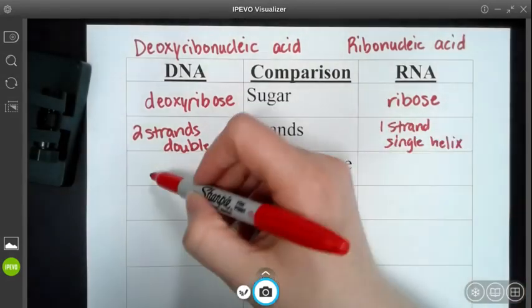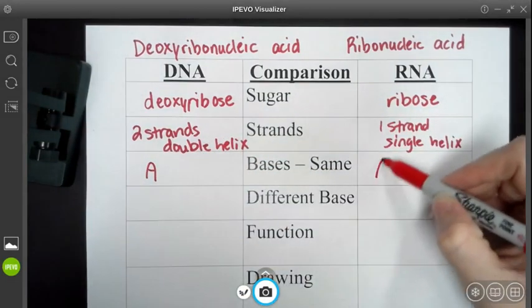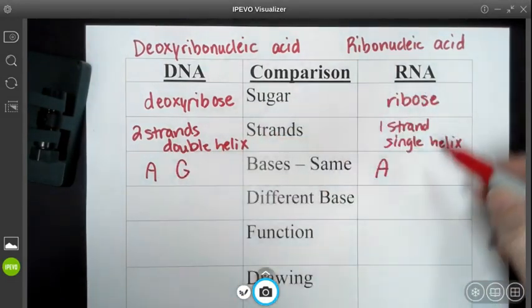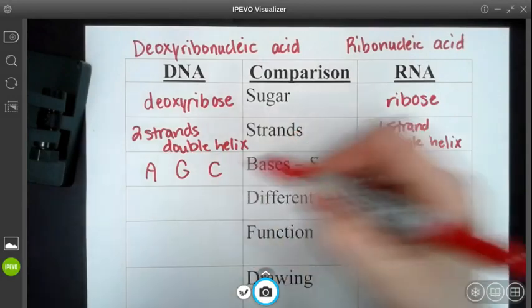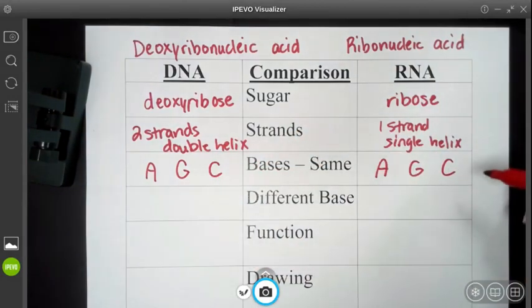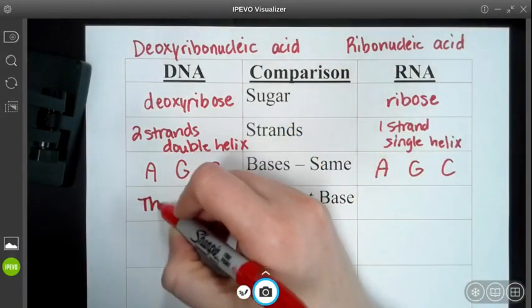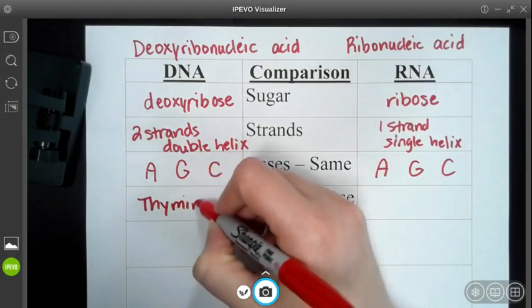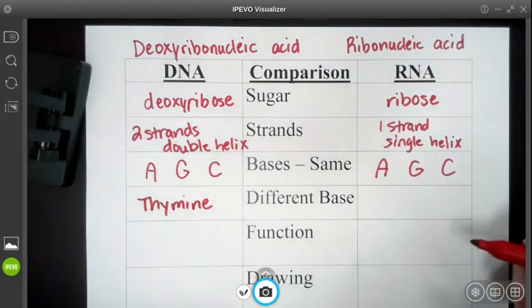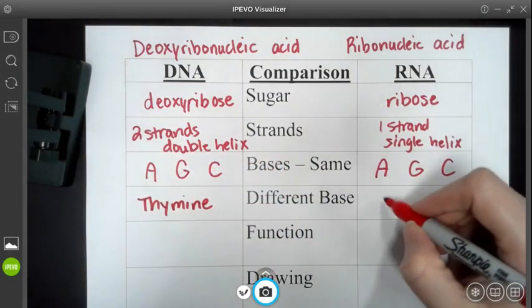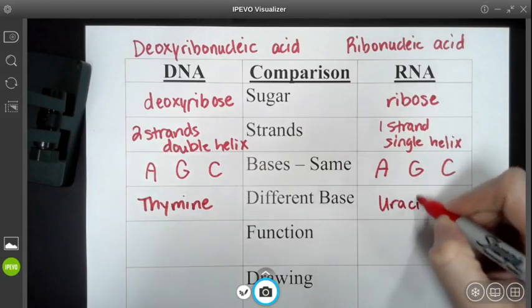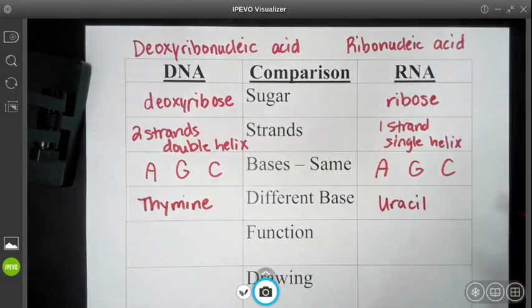The three that are found in both are adenine, guanine, and cytosine. Now DNA has a base that's unique to it called thymine, which would be T. And then RNA has uracil, which is a U.